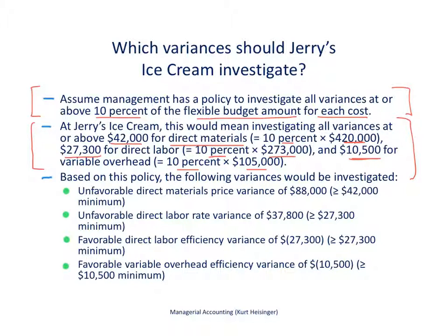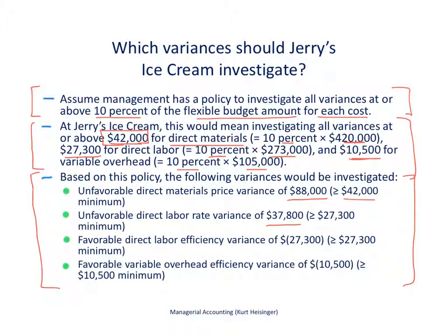Based on this policy, we will investigate four variances. First, the unfavorable direct materials price variance of $88,000, which exceeds the $42,000 threshold — we'll talk to our purchasing agents to find out why. Second, the unfavorable direct labor rate variance of $37,800, which is above the $27,300 threshold — we'll investigate why labor rates were higher than anticipated.